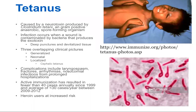The infection occurs when a wound is contaminated by bacteria that subsequently produces this exotoxin. Contaminated wounds with deep puncture trauma or devitalized tissue are at greatest risk because these are wounds that have the highest risk for developing necrosis and that very nice anaerobic environment that this bacteria prefers.